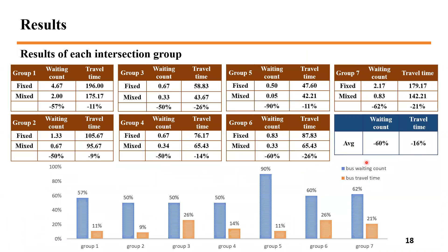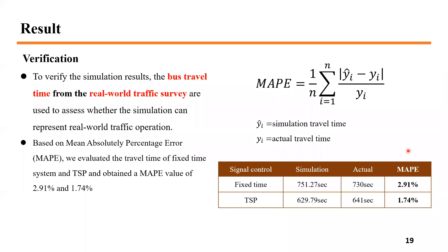Summarizing performance data from all seven groups, each group achieves a different level of improvement due to different environments. In total, across 21 intersections, we achieved a 60% reduction in waiting counts and a 16% reduction in travel time. To verify the simulation results, bus travel time from real-world traffic surveys is used to assess whether the simulation represents real-world traffic operation. Based on Mean Absolute Percentage Error (MAPE), we evaluated both fixed-time and TSP control, obtaining MAPE values of 2.91% and 1.74% respectively.